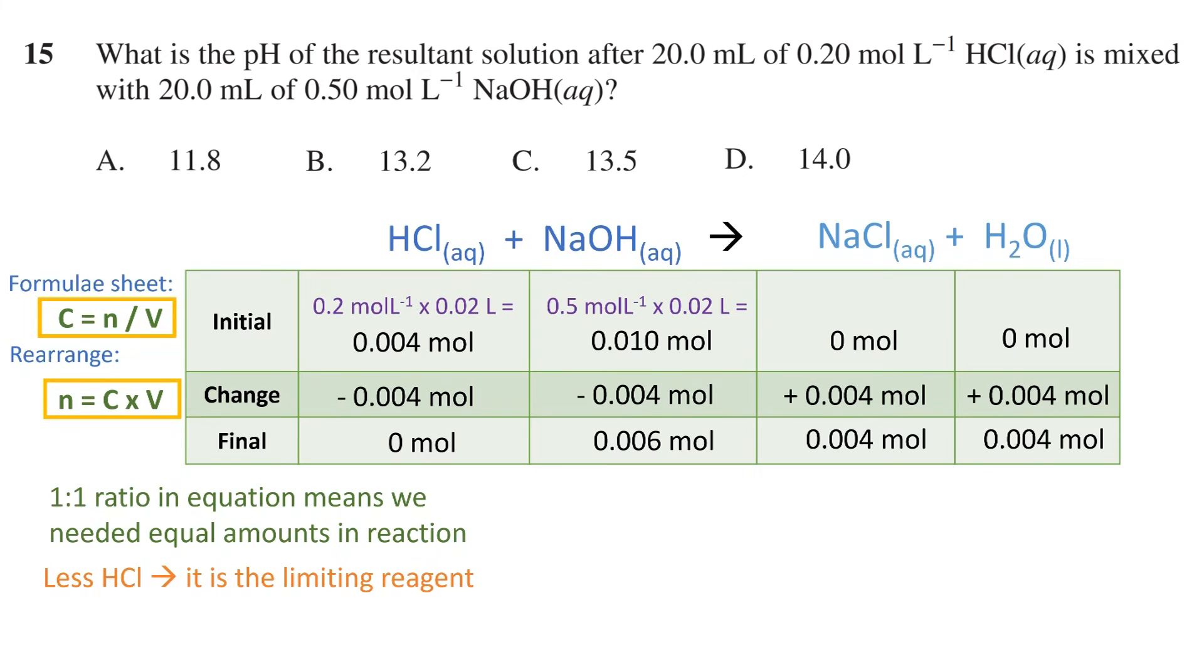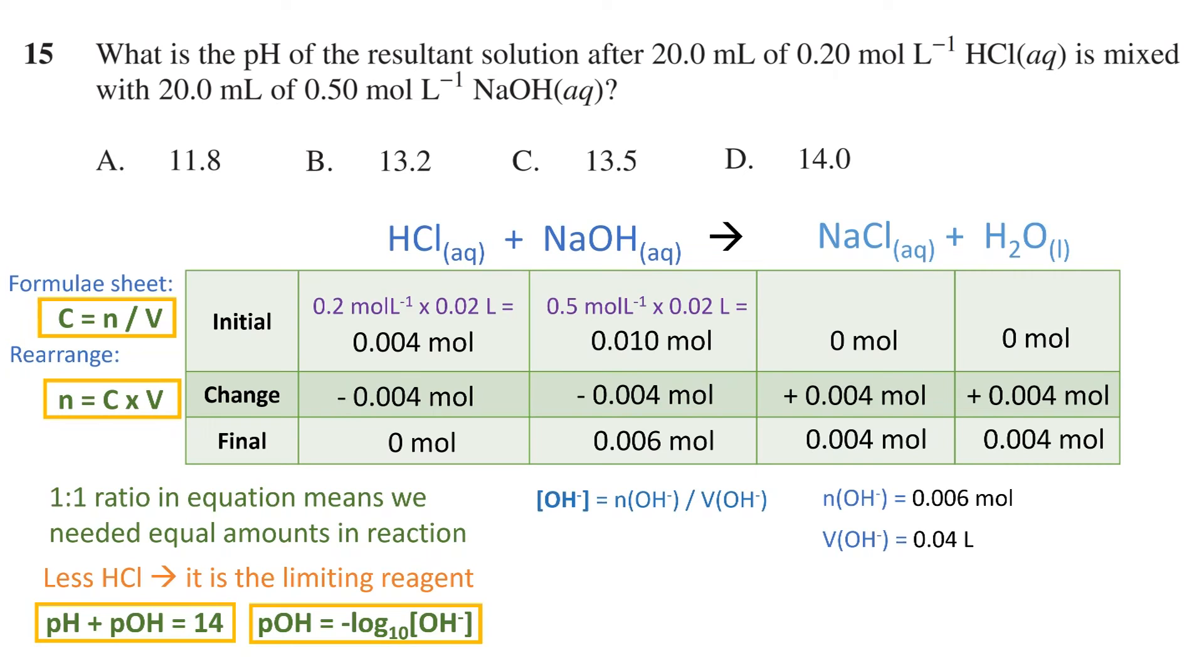In order to find the pH, we will need to use the formulas pH plus pOH equals 14, and pOH equals the negative log base 10 of the hydroxide ion concentration, because we know it is the hydroxide ions that are in excess. We can now calculate the concentration of hydroxide ions using the equation from the formula sheet, which in this case will be the number of moles divided by the volume. We know 0.006 moles of NaOH left over, which means the number of moles of hydroxide ions is also 0.006 moles. The volume of solution that these hydroxide ions sit in is 40 milliliters, or 0.04 liters. Substituting the values and plugging into our calculator, we get 0.15 moles per liter. We then plug 0.15 into our formula for pOH to get 0.824, at which point we can use the relationship between pH and pOH to plug in this value to find our final answer of 13.2.